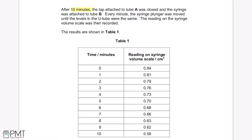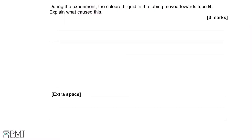After 10 minutes, the tap attached to tube A was closed and the syringe was attached to tube B. Every minute, the syringe plunger was moved until the levels of the U-tube were the same. The reading on the syringe volume scale was then recorded. The results are shown in Table 1. During the experiment, the colored liquid in the tubing moved towards tube B. Explain what caused this.